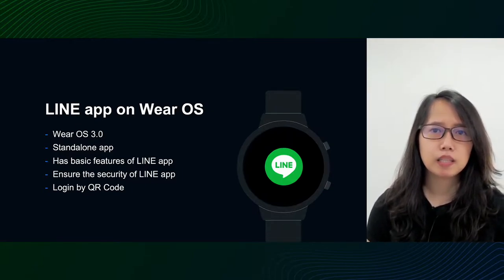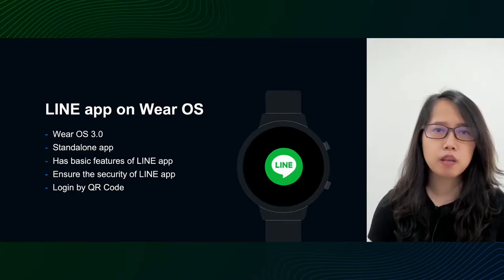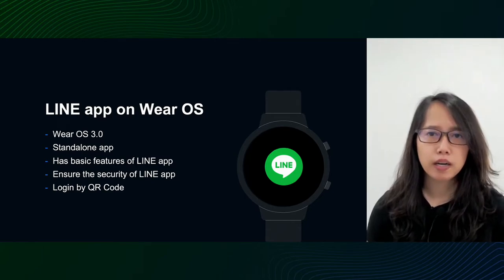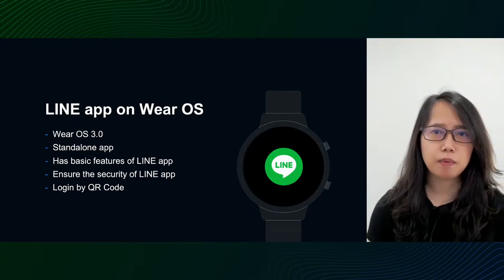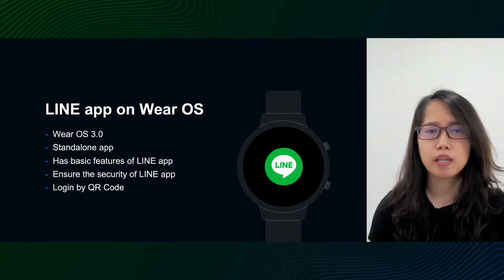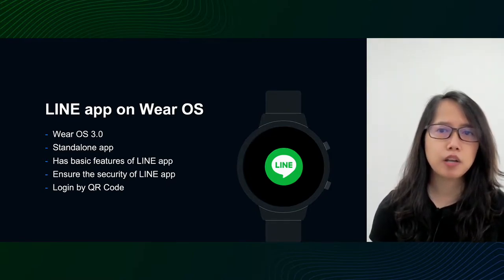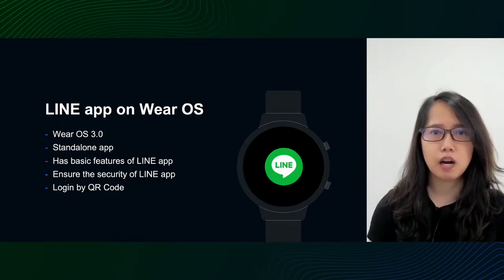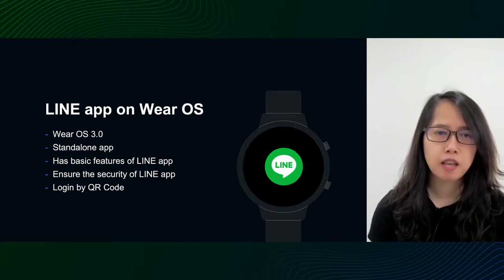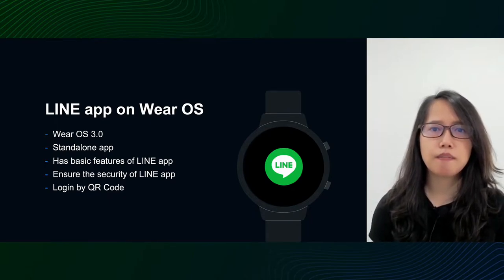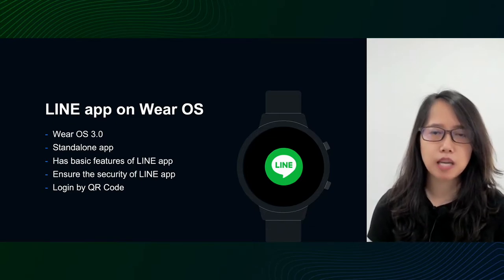We decided to build Live on WearOS 2.0 and later. The app will work properly with or without the Live Android application. If the Android application is installed on the phone, users can use some advanced features. But if not, the Live WearOS app still works as an independent messenger application. With the hardware limitations like battery and memory capacity, we only implement native features of Live Messenger on WearOS. For example, users can send and receive messages from contacts or groups. Messages are encrypted as on other platforms to ensure security. And users can only log in using a QR code, the most convenient login method for small devices like a smartwatch.